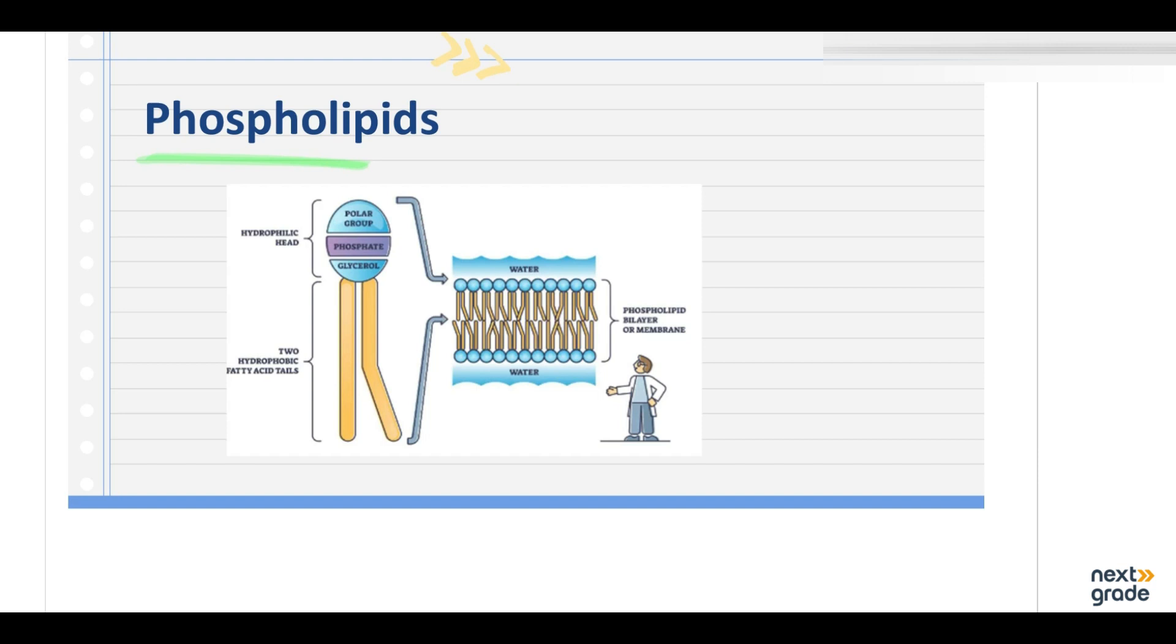Now phospholipids. So phospholipids are the derivatives of phosphatidic acid. They are composed of glycerol, they are composed of fatty acid and phosphoric acid. Nitrogenous bases such as choline and serine are important components of phospholipids. They also have hydrophobic tails and hydrophilic heads. This is a common structure of phospholipids.